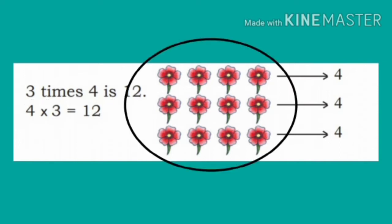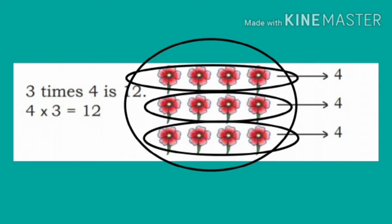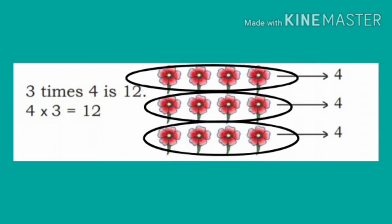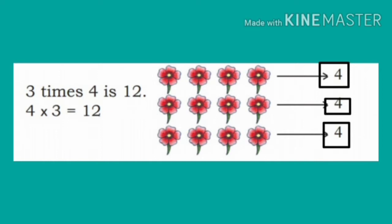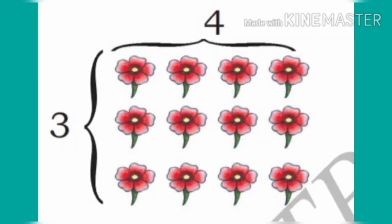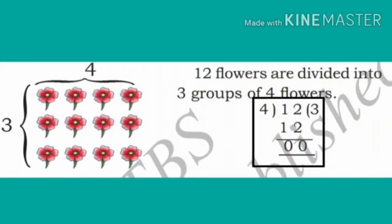Observe the flowers. There are 3 groups, and each group has 4 flowers. So 3 times 4 is 12. If we divide 12 flowers into 3 groups of 4 flowers, 12 divided by 4 is 3.